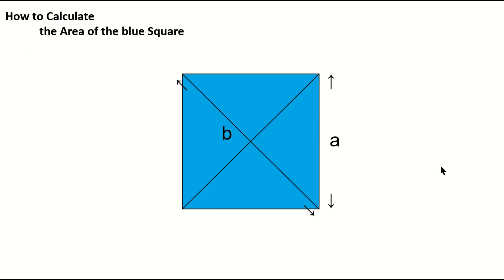Let's now review how to calculate the area of a square. Let's say the length of one side is A. Let's say the length of the diagonal is B. There are two main ways to calculate the area of a square. One is the square of the length of the side. The area of the blue square is A times A.